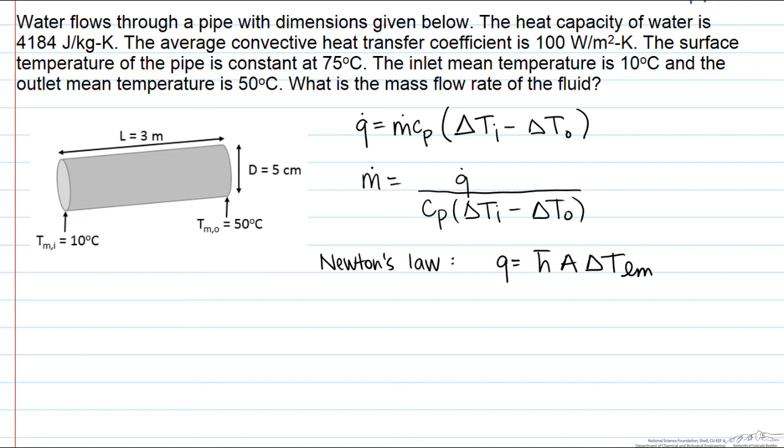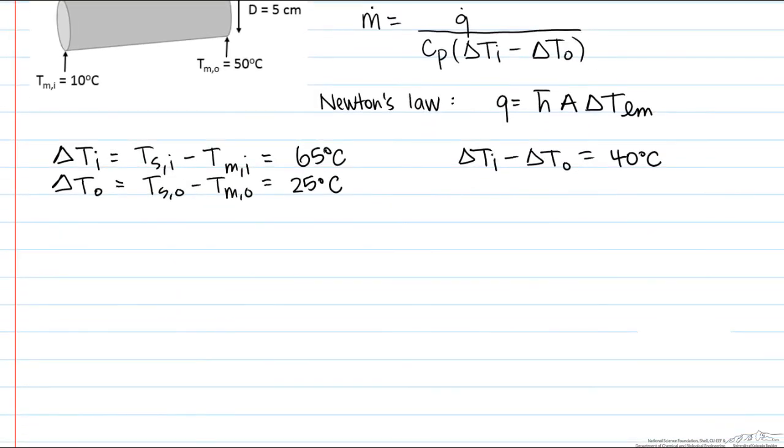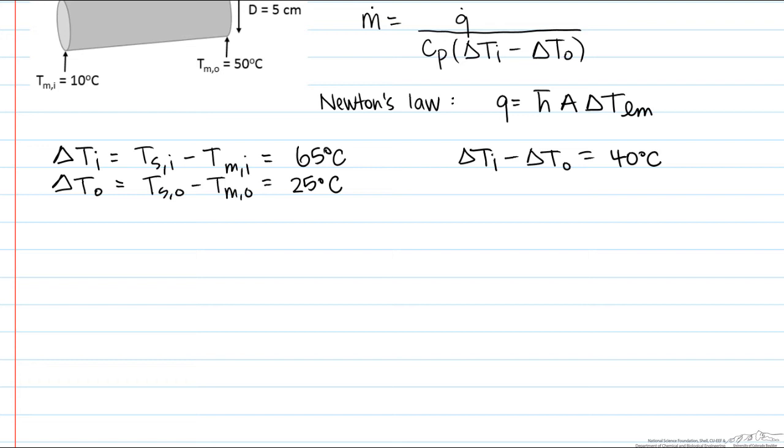Let's start by calculating all those delta Ts. Our delta Ti is equal to 75 degrees C minus 10 degrees C or 65 degrees C. Our delta To or out is 75 degrees C minus 50 degrees C which is 25 degrees C. So our delta Ti minus delta To is equal to 40 degrees C.